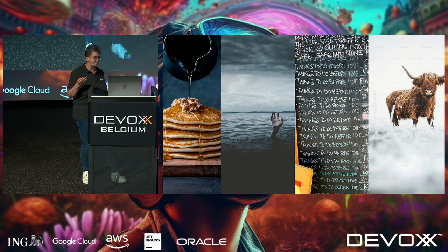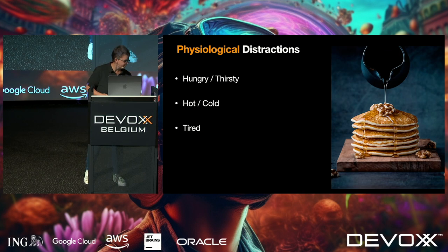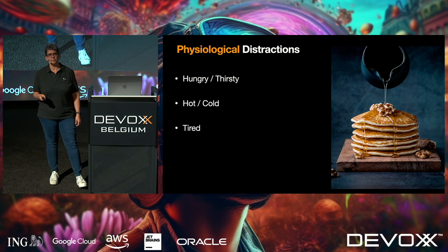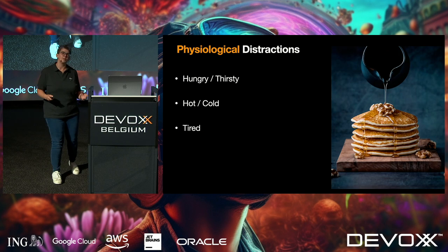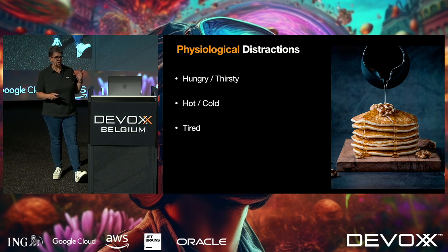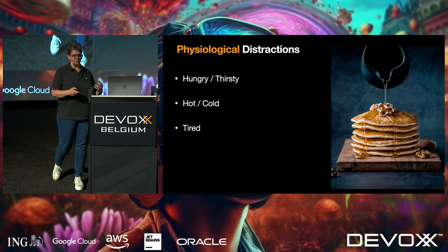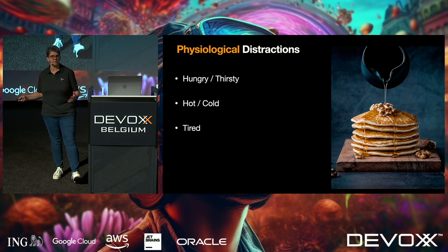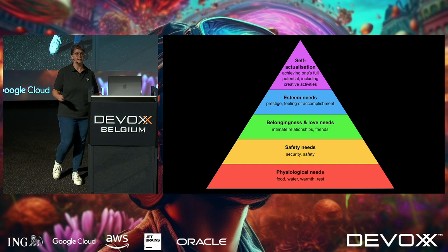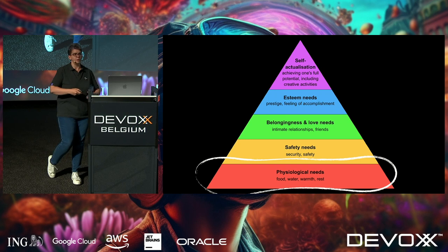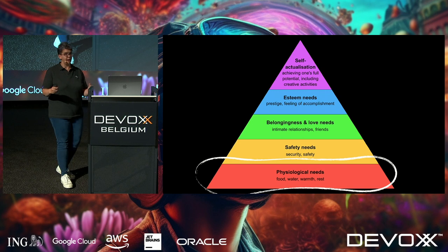First up: physiological distractions. I wasn't sure about putting this slide in — I thought, I'm not going to stand in front of a few hundred people and tell them how to eat and drink. But the number of times a co-worker has said 'Helen, you're in a terrible mood' and I realise I skipped lunch. If you're hot, tired, hungry, or cold — these are blocking distractions. You are not going to get whatever you're trying to do done. This is the bottom of Maslow's hierarchy of needs — physiological needs are blockers.